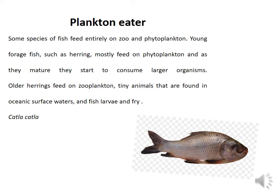Another kind of feeding group is plankton eaters. Some species of fish feed entirely on zoo- and phytoplankton. Young forage fish such as herring mostly feed on phytoplankton, and as they mature they start to consume larger organisms. Older herring feed on zooplankton — tiny animals found in oceanic surface water — and different types of fish larvae and fry. An example of a plankton eater is katla. Katla fish are surface and mid-water feeders; the young feed on both zooplankton and phytoplankton, but mature fish generally feed on zooplankton.